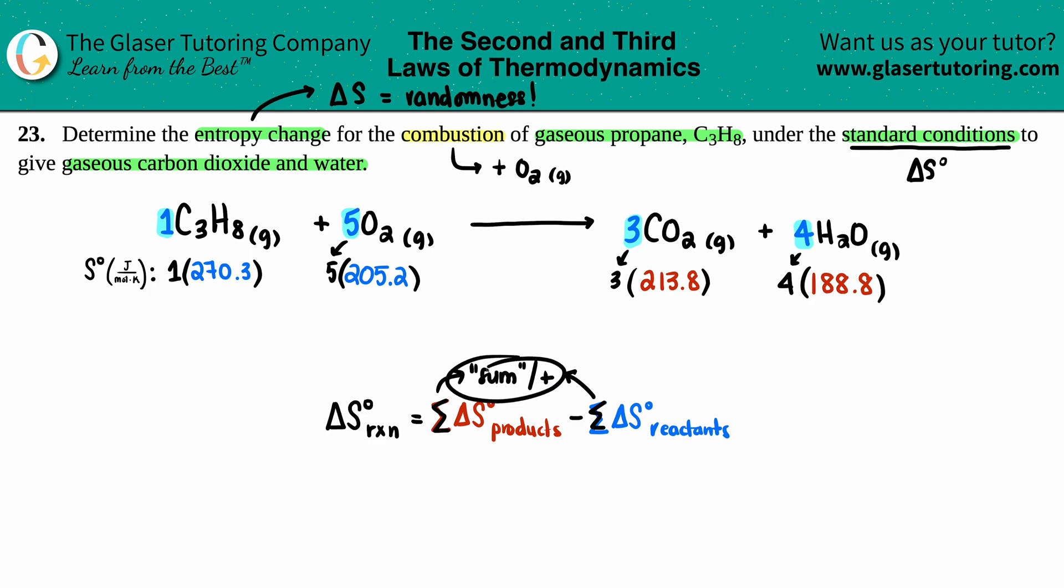Now since it's the sum, literally there's a plus sign right in between the two reactants, so I'm just going to add them together. Plus sign in front of the products, I'm going to add these two numbers together and that's the whole entire sum for both sides. So let's see what we get for the reactants, the blue side. So I had 270.3 plus five times 205.2.